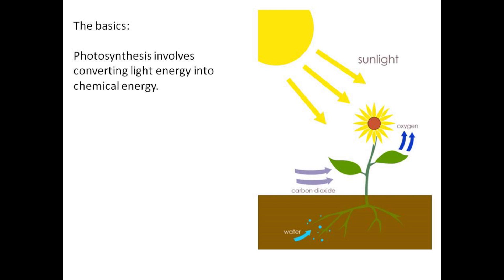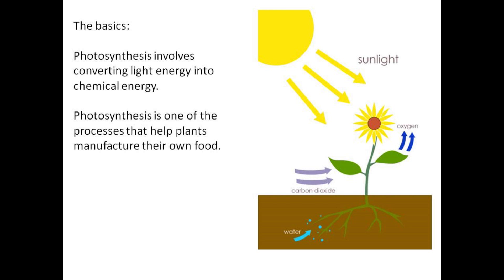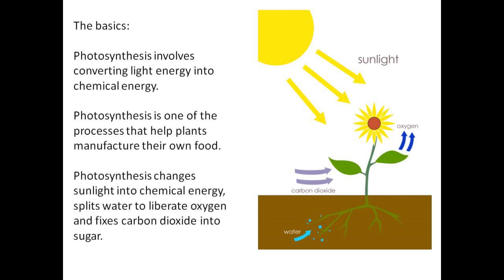Photosynthesis involves converting light energy into chemical energy. It is one of the processes that help plants manufacture their own food. Photosynthesis changes sunlight into chemical energy, splits water to liberate oxygen, and fixes carbon dioxide into sugar.